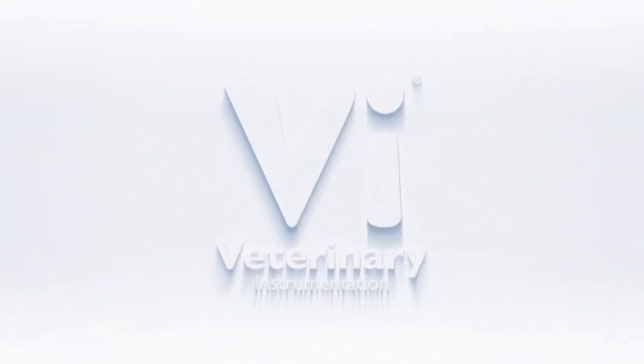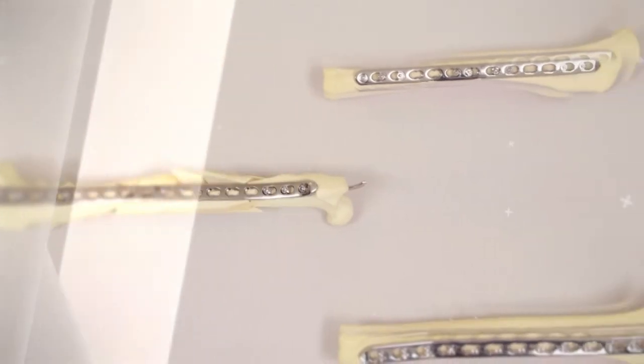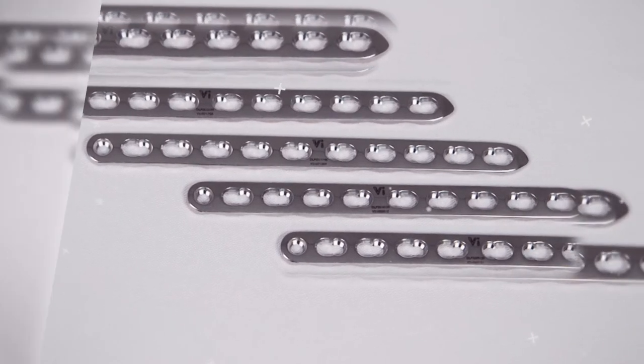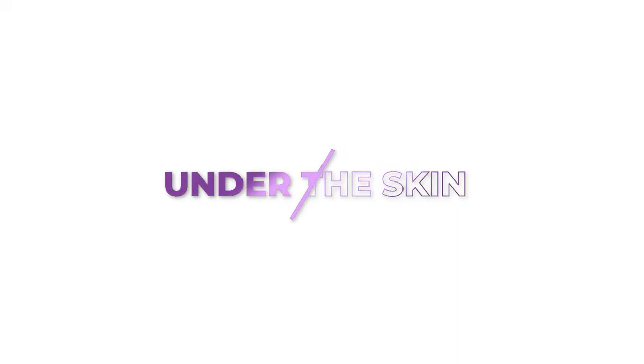Hello and welcome to Veterinary Instrumentation's latest episode of Under the Skin, a videography and animation series introducing key devices and techniques used during orthopedic surgery. In this episode we're looking at how a dynamic locking plate, or DLP, is used as a neutralization plate for oblique or spiral fracture fixation. So, let's go Under the Skin!